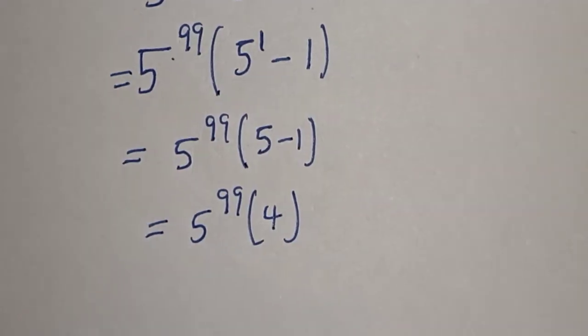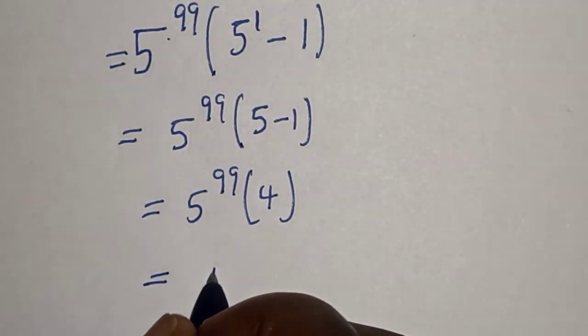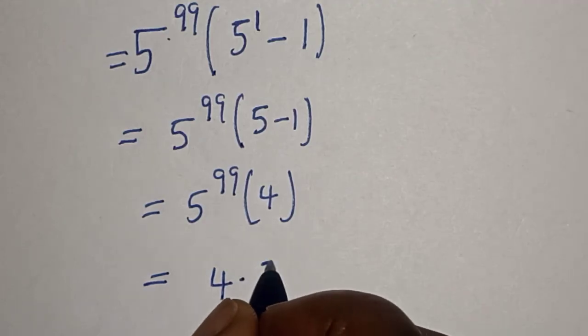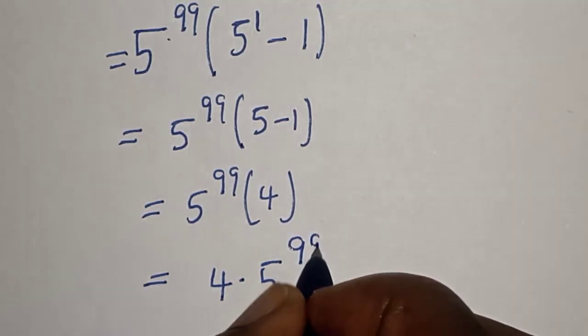Then this is equal to 5 raised to power 99 multiplied by 5 minus 1, and that is 4. Our final answer is 4 multiplied by 5 raised to power 99.